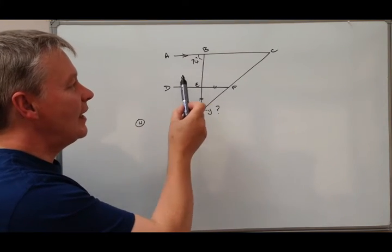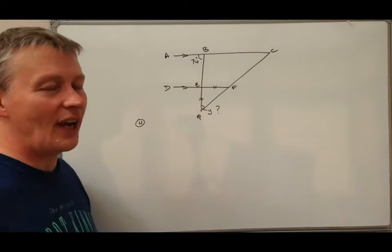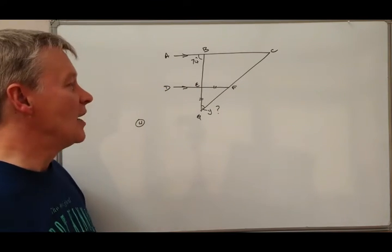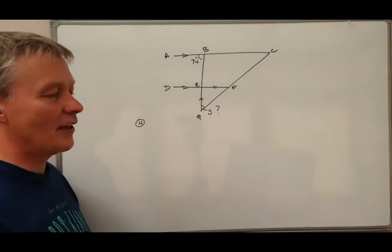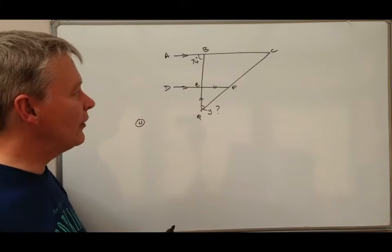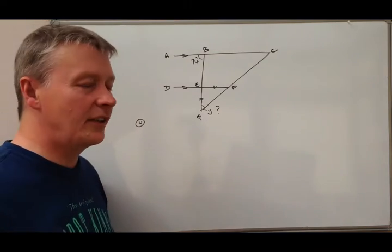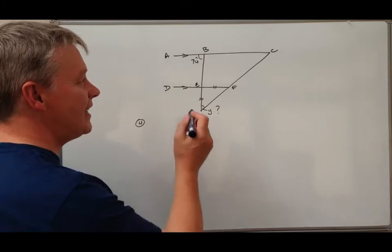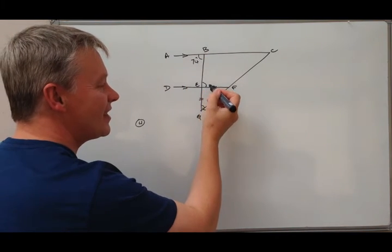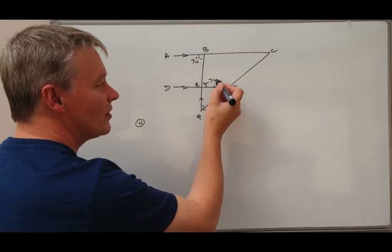The first thing I'm going to do is I need to get closer to this isosceles triangle. One of the things I do know is that I can use something called alternate angles being equal. So if this is 74, it also means this angle here is also 74 degrees, and that's key to answering this question.